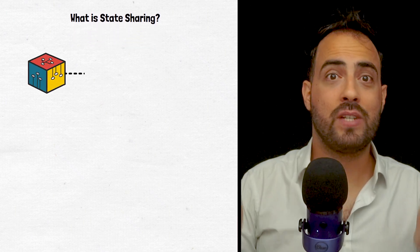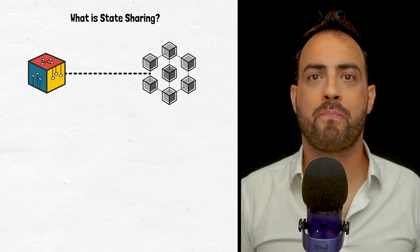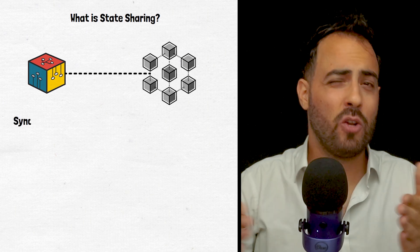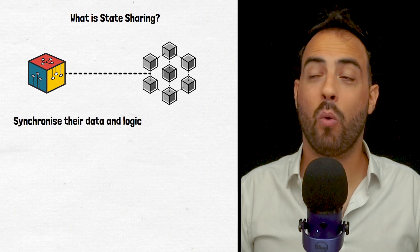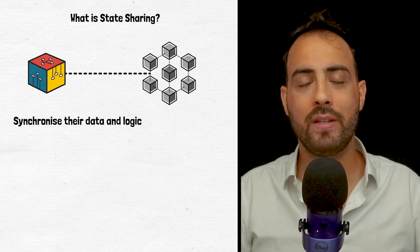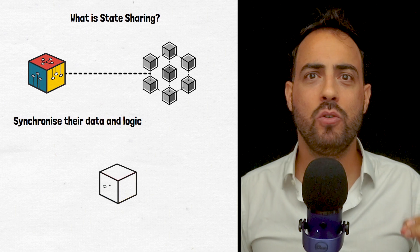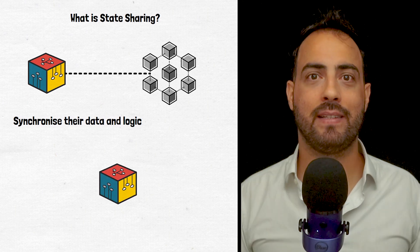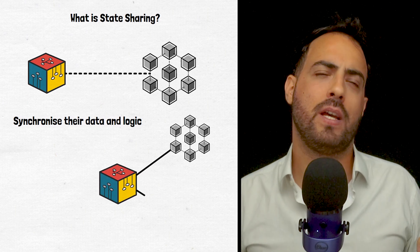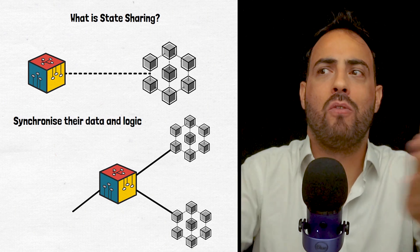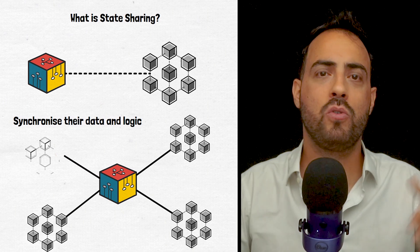Next, there is state sharing, which allows applications to share state across blockchains. This means they can synchronize their data and logic without relying on centralized servers or databases. This enables applications to operate as a single entity across multiple blockchains, creating a more convenient and seamless user experience.